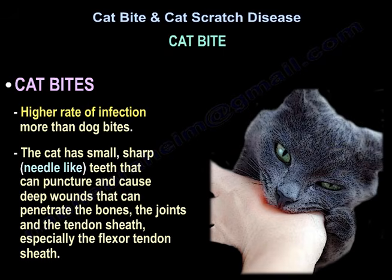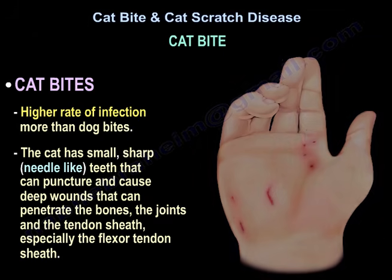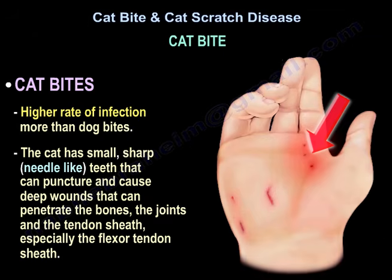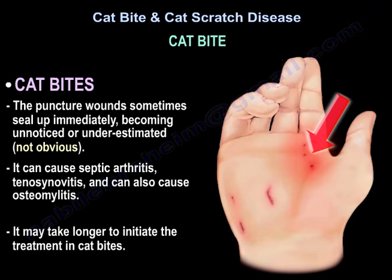Dog bites usually cause structural damage, while cat bites have a higher rate of infection than dog bites because the cat has small, sharp, needle-like teeth that can puncture and cause deep wounds that can penetrate the bones, the joints, and the tendon sheath — especially the flexor tendon sheath. The puncture wounds sometimes seal up immediately and become unnoticed or underestimated.